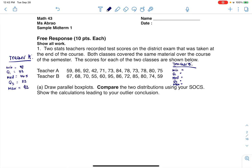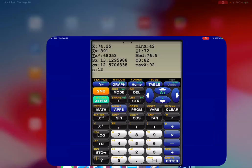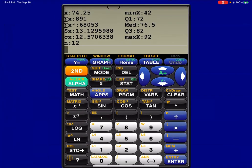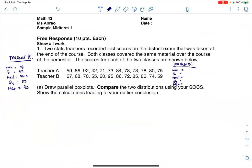I'm going to do the same thing for teacher B, which was in L2. Let's do stat, calc, one-var stats on L2. So 55, 63.5, 71, 82.5, and 95. Let me write those out. We had 55, 63.5, 71, 82.5, and finally 95.